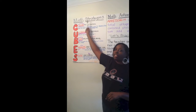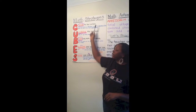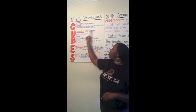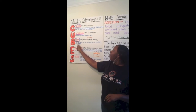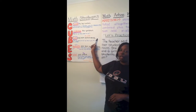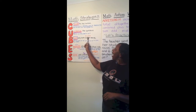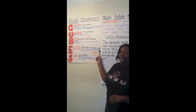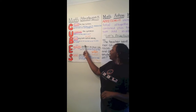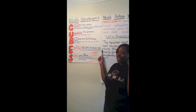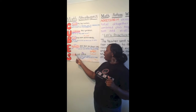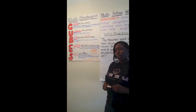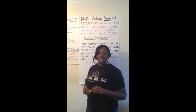Let's say this together — math strategy CUBES: C means circle the key numbers; U means underline the question; B means box any math action words; E means evaluate what steps you should take; S means solve and check.